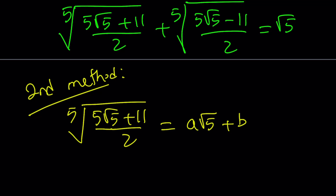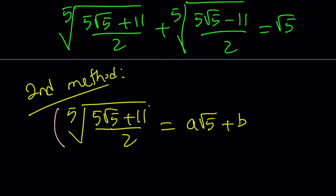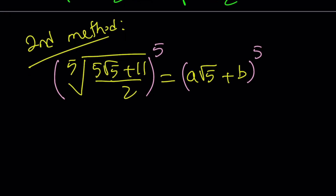Why a√5 + b? Well, you could also write it as a + b√5. A and B are rationals in this case. I'm going to raise both sides to the fifth power to get rid of the fifth root. When I do this, it's going to be messy - very messy. Let me give you what's going to happen on the right-hand side first.